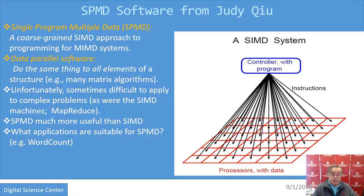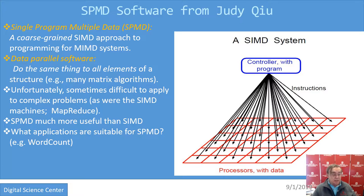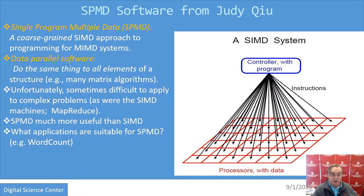But they tend to always be single program multiple data. When you do Hadoop, the maps are all running the same code. They're not producing the same results, because that same code is using different data on each process. That data will invoke if-statements in the code, and the code will be at different points at a given time. So these are important concepts you should know about as you delve into big data programming on clouds.